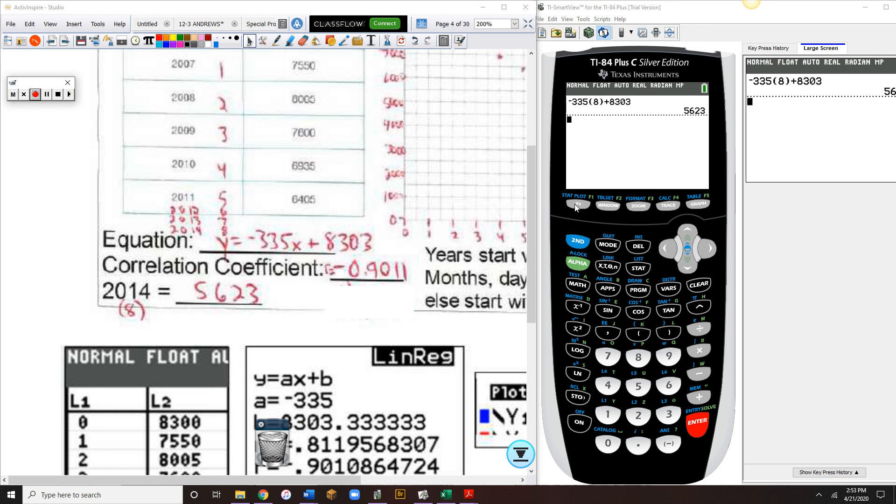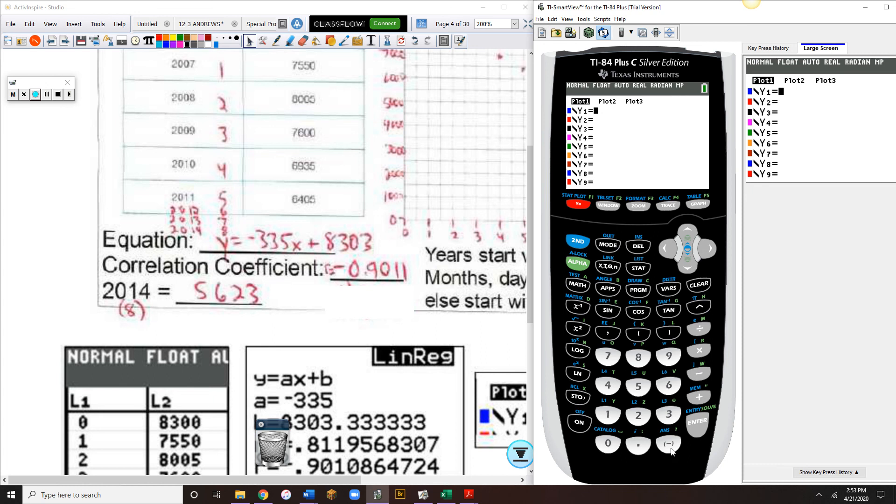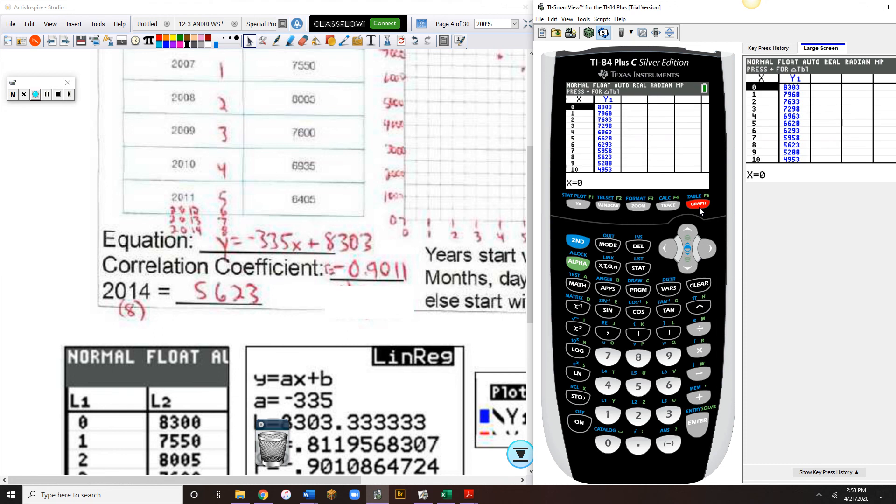If you're being asked to do multiple predictions about the same data, it would be easier to go into your y equals. So negative 335x plus 8303, and look at your table. Scroll down until you get to the 8. And you see that answer of 5,623. But you don't have to do that when you're only doing one prediction. That took a lot of extra steps.